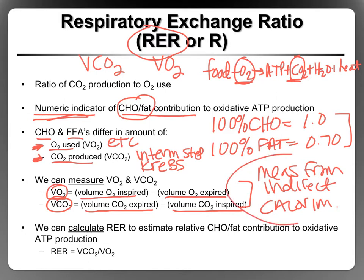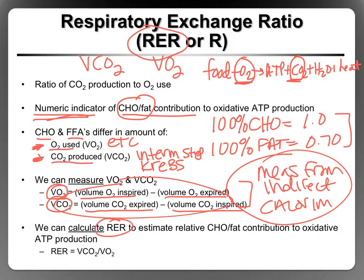We're not going to be measuring these in class; in class I would give you the values of VO2 and VCO2 — I just want you to have an appreciation for where they come from. Once you have those values, it's easy to calculate RER because RER is simply VCO2 divided by VO2. If you know how much CO2 you produce and divide it by the amount of oxygen you use, that gives you your RER value, which will be at most 1.0 and at least 0.7.